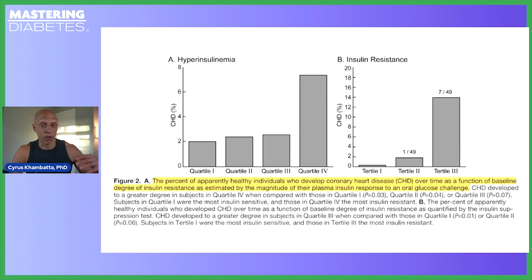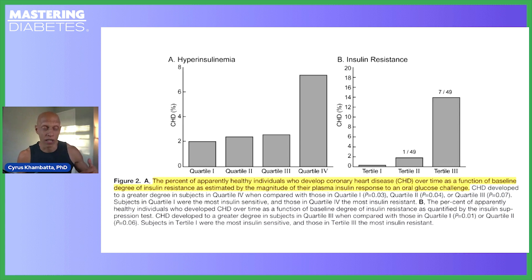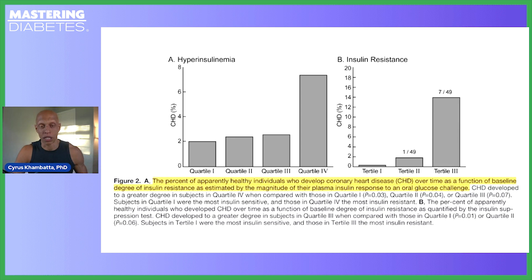Looking at it from another perspective — classifying people into three buckets of low, medium, or high insulin resistance — those in the highest category have a 14% risk for the development of coronary heart disease, versus those in the bottom two tertiles who have a risk as low as 2%. No matter how you slice it, whether there's excess insulin in your blood or you're living in an insulin resistant state, your risk for the development of heart disease is very high. And importantly, this is in people who are not diabetic and don't even have prediabetes.